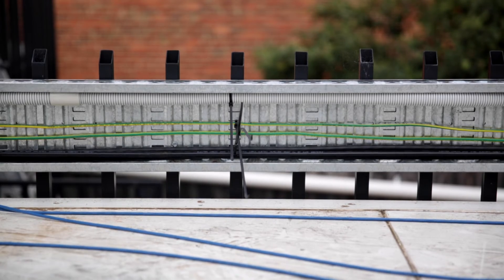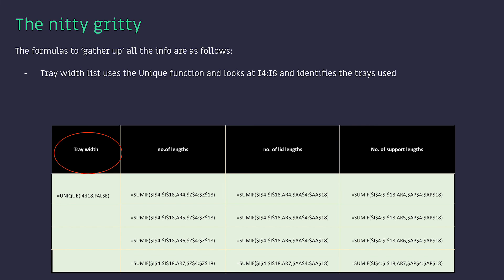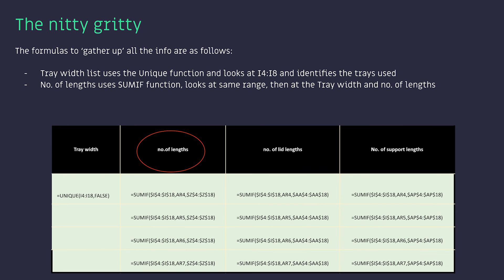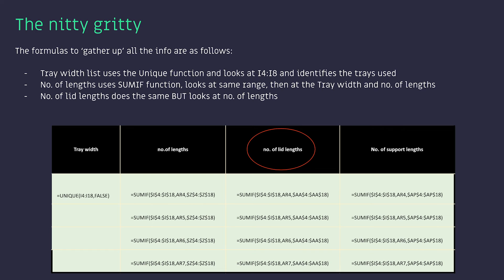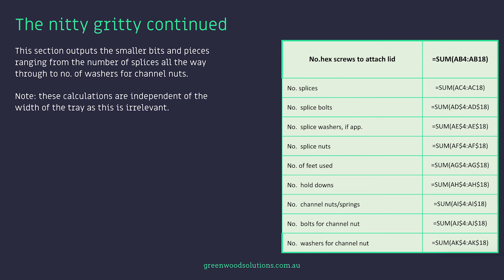As there are a few different tray profiles, we need to know the totals. The formulas to gather up all the info are as follows. Tray width list uses a UNIQUE function that looks at the range I4 to I8 and identifies the trays used. The number of lengths uses the SUMIF function, looks at the same range, then at the tray width and number of lengths. Number of lid lengths does the same, but looks at number of lid lengths. Number of support lengths is again the same. This section outputs the smaller bits and pieces ranging from the number of splices all the way through to the number of washers for channel nuts. Note these calculations are independent of the width of the tray, as this is irrelevant.